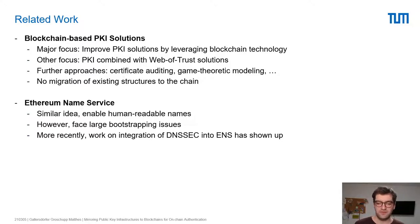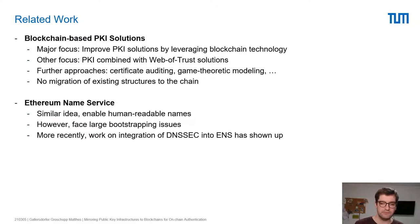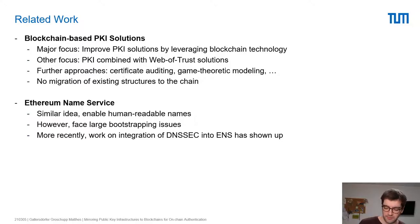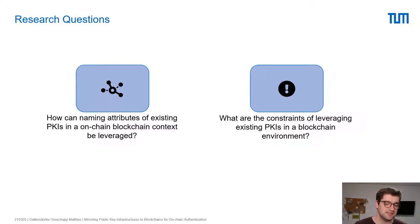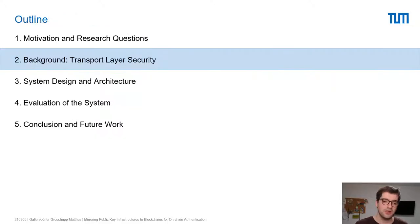In contrast, the TLS certificate system is widely adopted by almost every business worldwide that has a domain. Notably, the ENS developer team is working on integration of DNSSEC into ENS, which would allow regular domains to be used in an on-chain environment. Our research questions ask: how can naming attributes of existing PKIs be leveraged in a blockchain context, and what are the constraints of using existing PKIs in a blockchain environment?